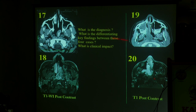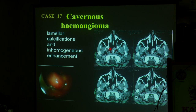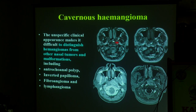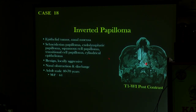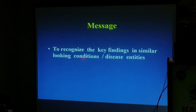Last cases: all four look similar — like cat, dog, tiger — you want to identify which is which. Everything shows mucosal lesions with varying calcification and enhancement. First: cavernous hemangioma — lamellar calcification, inhomogeneous enhancement. Second: also cavernous hemangioma — inhomogeneous calcification and enhancement. Third: inverted papilloma — typical cerebriform enhancement pattern. Fourth: antrochoanal polyp — varying density, not much enhancement. Juvenile angiofibroma — intense enhancement. Recognize key findings in similar-looking disease entities. With this, I stop. Thank you very much.